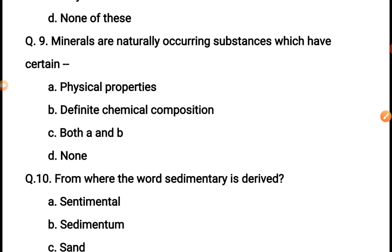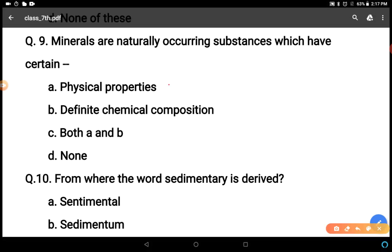Minerals are naturally occurring substances which have certain physical properties - option A, definite chemical composition, both A and B, or none. Definitely minerals are having physical properties also and definite chemical composition, so C is the correct answer again.